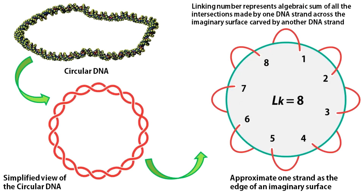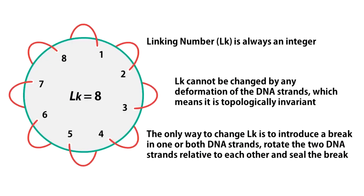The fundamental topological parameter of a closed circular DNA is called the linking number. Assume that one DNA strand is the edge of an imaginary surface and count the number of times the other strand crosses this surface. The algebraic sum of all intersections is the linking number. Two important features of linking number are evident from this figure. First, linking number is always an integer. Second, linking number cannot be changed by any deformation of the DNA strands, which means it is topologically invariant. The only way to change linking number is to introduce a break in one or both DNA strands, rotate the two strands relative to each other, and then reseal the break. This is exactly what DNA topoisomerase enzymes do.